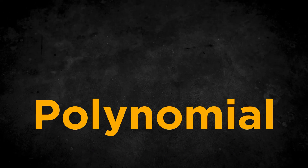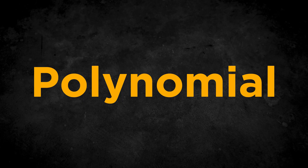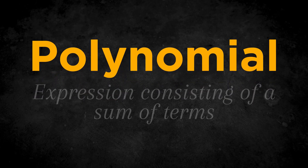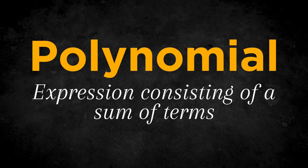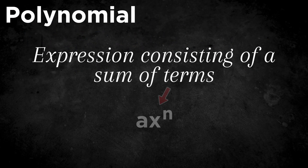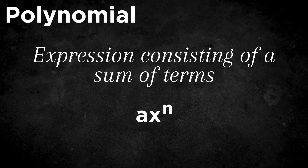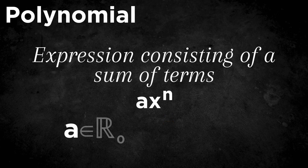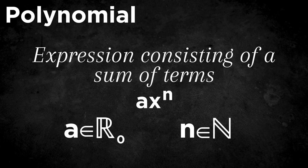Let's start by recalling what a polynomial is. A polynomial is an expression consisting of a sum of terms, where each term is a coefficient multiplied by a variable x raised to a non-negative integer power. So a can be any real number apart from zero, but n can only be a positive integer.